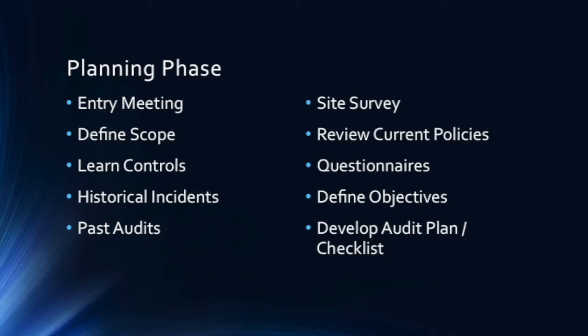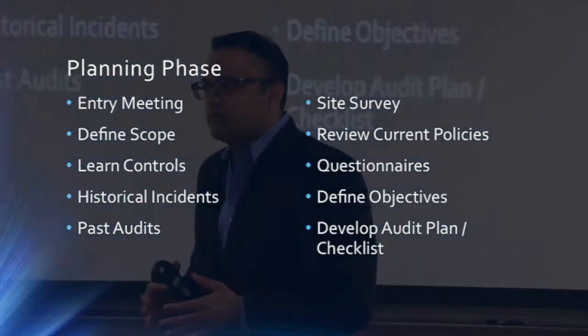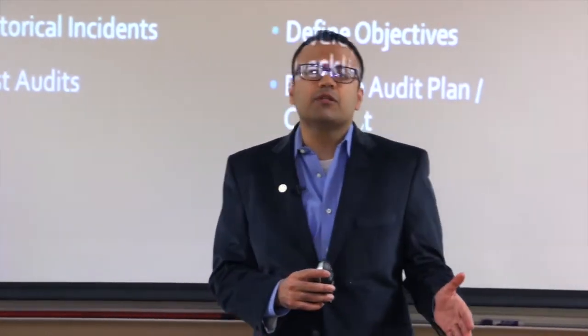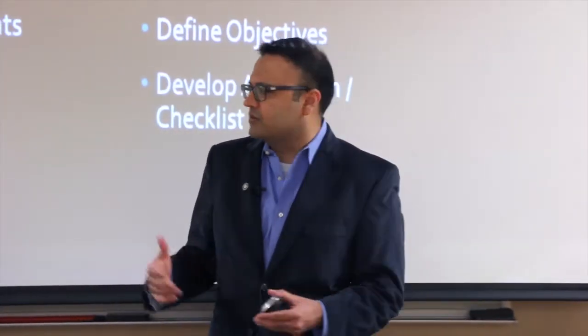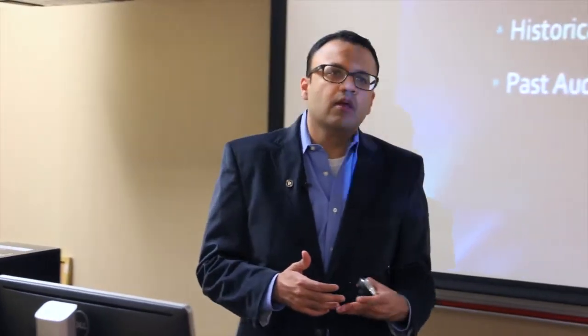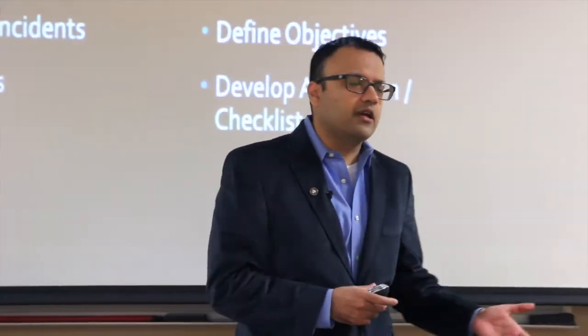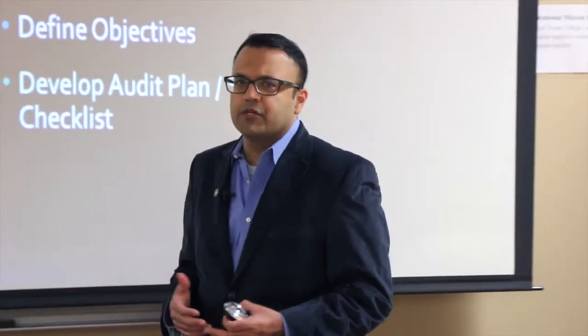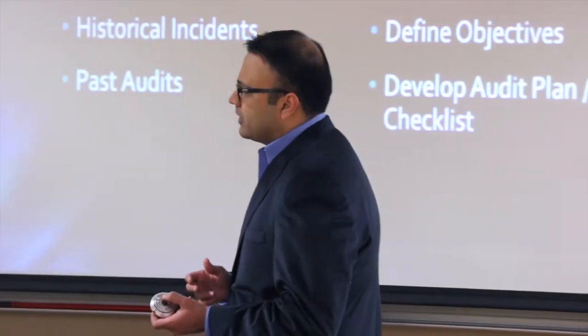The fourth element is reviewing historical incidents — any incidents from the last six months or two years — so auditors understand what happened and what changes were made in the interim. The fifth element is past audits: knowing whether the organization has done software application audits, hardware audits, or disaster recovery audits previously gives auditors much more context about the organization.